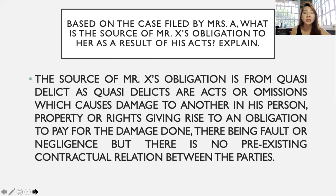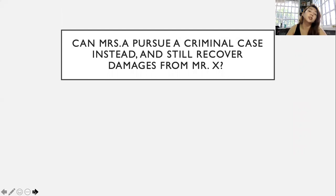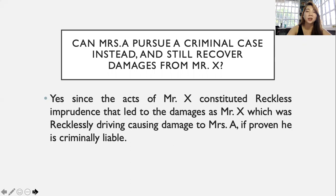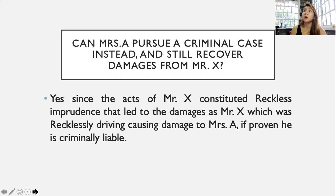There was no pre-existing obligation between the two and no contractual relation. There was fault and negligence on the part of Mr. X which caused damage to Mrs. A — she was hospitalized, incurred physical injuries, and suffered an abortion. Can Mrs. A pursue a criminal case instead and still recover damages from Mr. X? Yes, since the acts of Mr. X constituted reckless imprudence that led to damages. Article 1161 provides that civil obligations arising from criminal offenses shall be governed by the penal laws or the RPC, subject to the provisions of Article 2177 and the pertinent provisions on Human Relations. Since Mr. X was recklessly driving and causing damage to Mrs. A, if proven criminally liable, he is also civilly liable under Article 100 of the RPC. He can also be sued civilly under Article 1161.